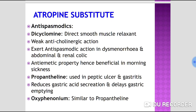Atropine substitutes as antispasmodics: dicyclomine is the most commonly used antispasmodic in clinical practice. It is a direct smooth muscle relaxant with weak anticholinergic action, exerting antispasmodic effects in dysmenorrhea, abdominal colic, renal colic, and biliary colic. It also has antiemetic properties, making it beneficial in morning sickness and motion sickness.